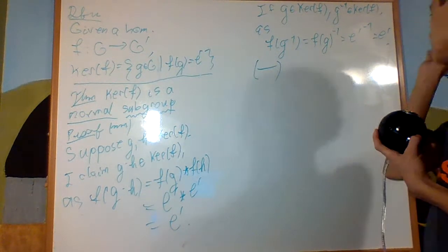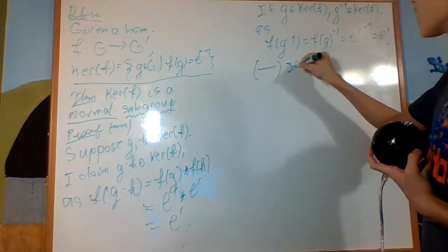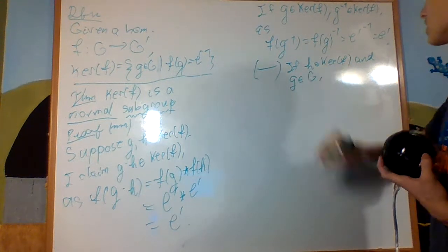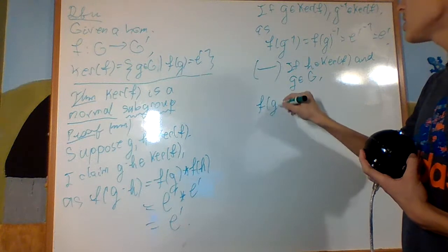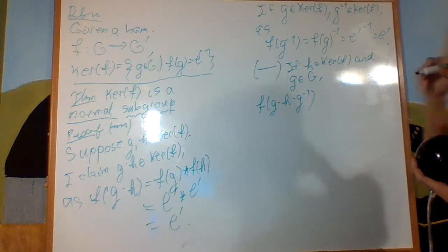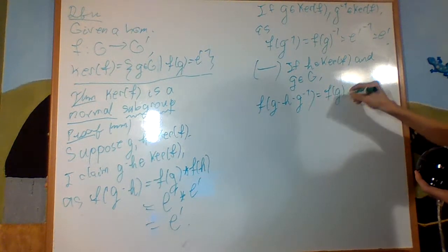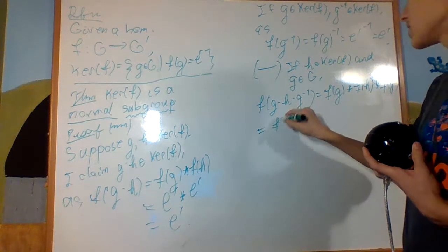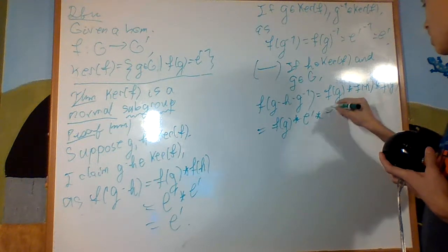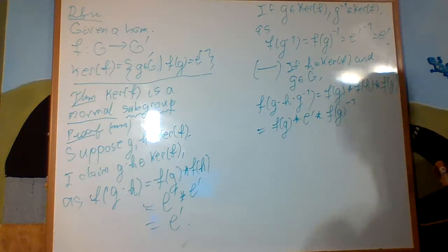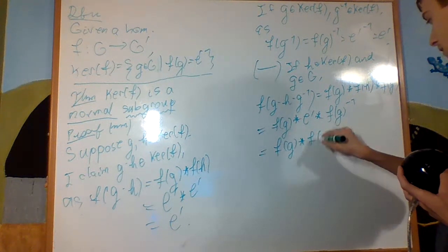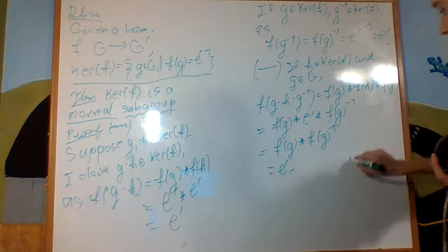Now let's prove that it's normal. Why is it normal? If H is an element of the kernel of F and G is an element of G, then F of G times H times G inverse equals F of G star F of H star F of G inverse, which equals F of G star E prime star F of G inverse, since F of H is the identity. F of G inverse equals F of G inverted, giving us F of G star F of G inverse, which equals E prime. Therefore it's closed under conjugation and it's a normal subgroup.